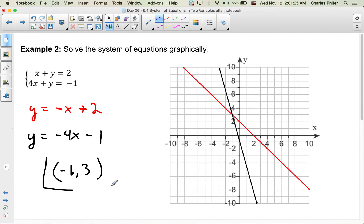When x is negative 1 and y is 3, we should get a true solution. Negative 1 plus 3 is 2. Negative 4 plus 3 is negative 1. So this works. Graphically, the solution is where the two lines cross.